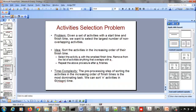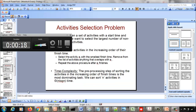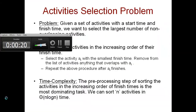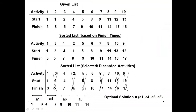This problem is the activity selection problem, which you might have come across in everyday life. You have a list of activities with start times - from morning to evening or night - what activities you have to do, when you can start them, and what time it takes to finish them. For example, if you start activity one at time one, you can finish at time three; if you start activity two at time one, you can finish at time eight.